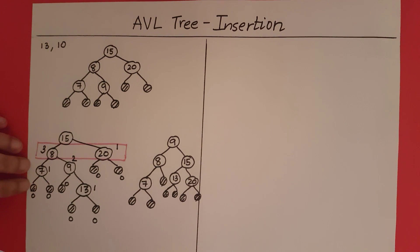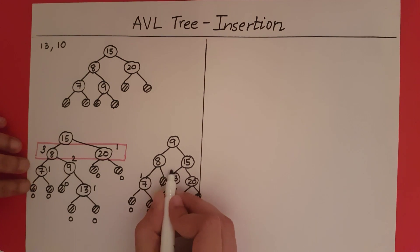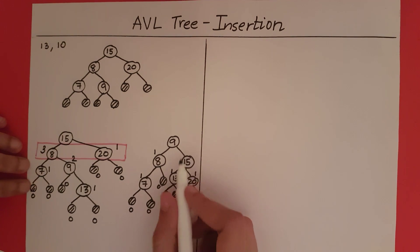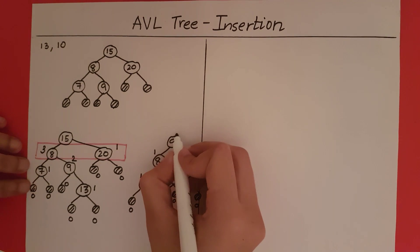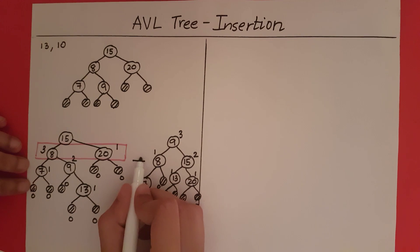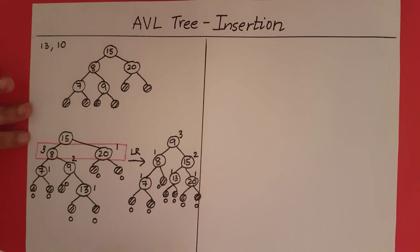Looking at the height differences after rotation: external nodes have height 0, their parents have height 1, 15 gets height 2, and 9 gets height 3. There is no imbalance in this tree. As you may recall from the previous video, this is a left-right rotation. Now that there is no imbalance, we can go on to the next element.